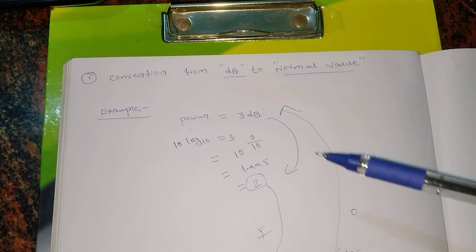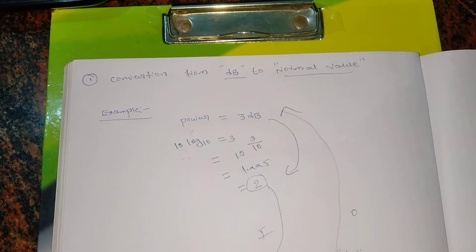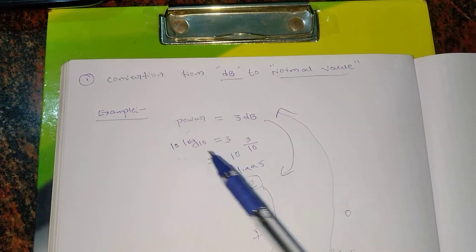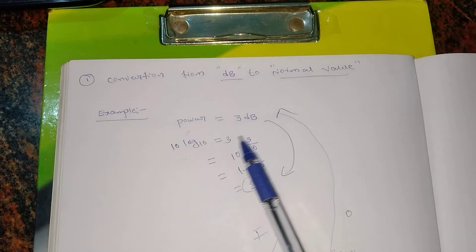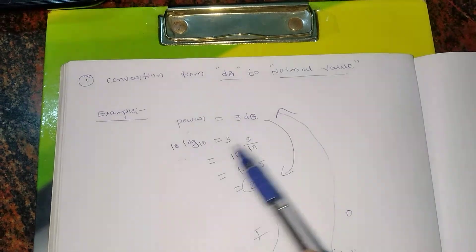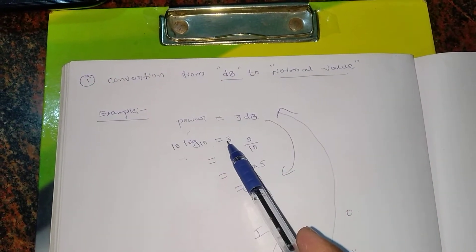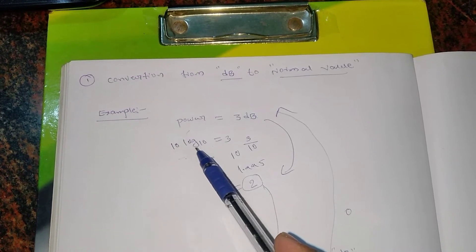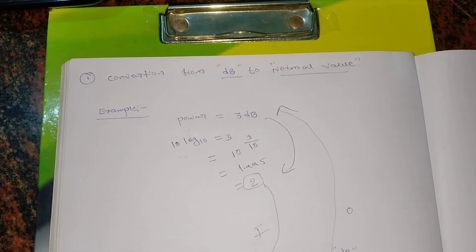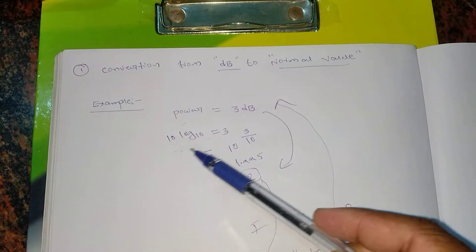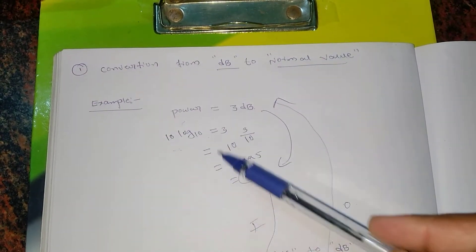Let's see how to solve that one. Given power, you just write like this: 10 log 10 of P equal to 3. That means I'm converting to the logarithmic scale - I mean multiplying by log scale in order to make it a normal value. Because it's in dB, I'll just write 10 log 10 equal to 3.